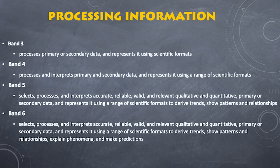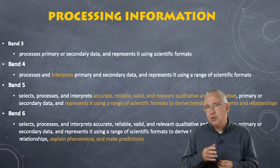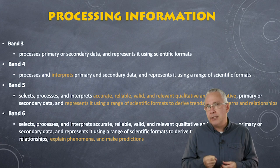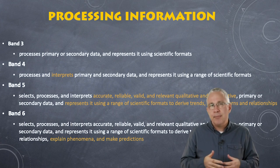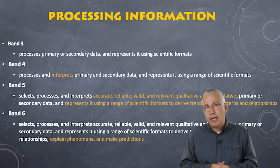What about processing information? This involves understanding and putting together information, including information represented in different formats and being able to extract meaning from it. As you go up the bands there's an increasing level of complexity. Students are able to interpret accurately, reliably, and with validity — relevant qualitative and quantitative data, primary and secondary — and explain phenomena and make predictions. A good example is graphing: can you look at a graph, extract the information, and explain certain things? In physics you might draw a graph, work out the slope, and determine something from the slope to explain a concept. That's the hallmark of a band 5 and 6.